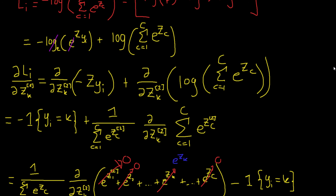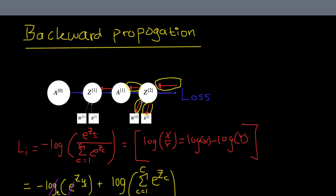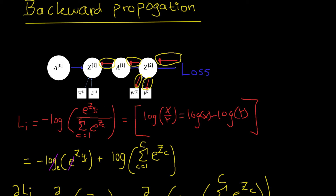We've now done all the tricky parts. We've computed the gradient of the loss with respect to Z2, W2, b2, A1, and Z1. The only thing left is to compute the gradients for layer one, which are essentially the exact same computations we've already done — just with the numbers from layer 2 changed to layer 1. That's it for the computation of backward propagation. In the next video, we will see how we can use these calculations to implement a neural network from scratch in NumPy.